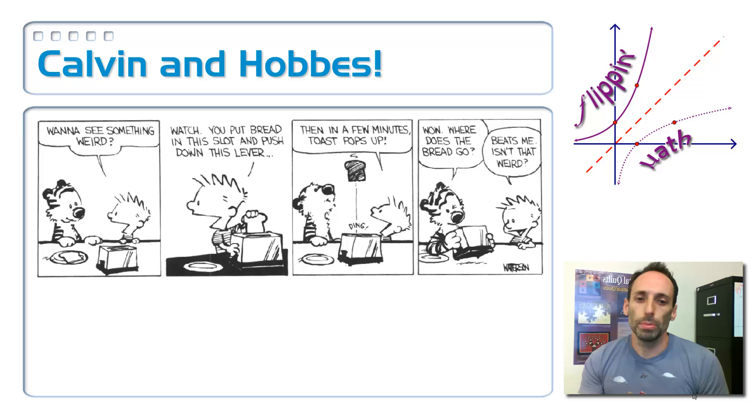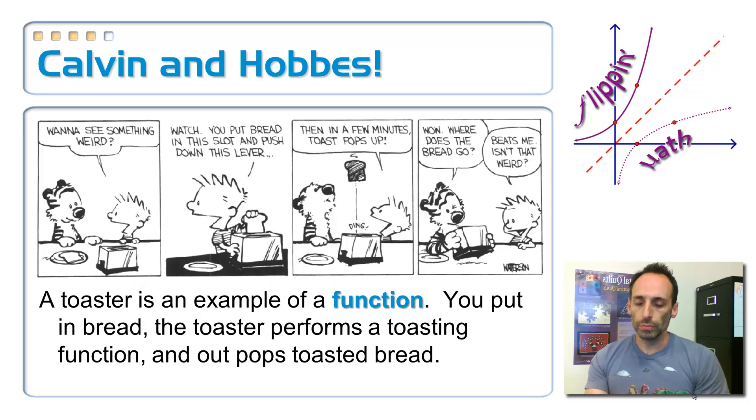I put this in here because I've got a couple questions for you. What does any appliance represent? It represents a function. A toaster is a function. Your washer and dryer would be a function because it performs one task. You stick something in and something else comes out of it. A toaster is an example of a function. You put in bread, the toaster performs a toasting function, and then out pops toasted bread.